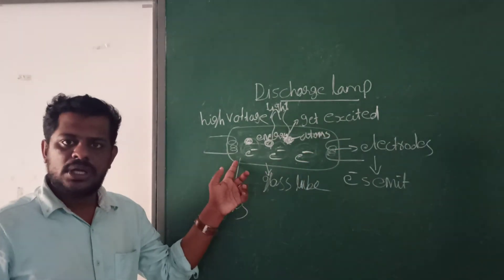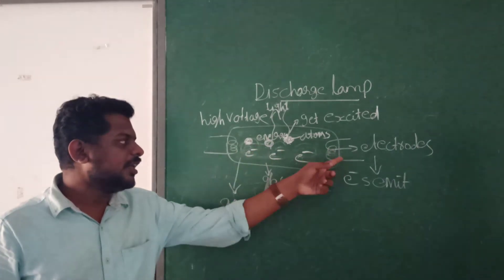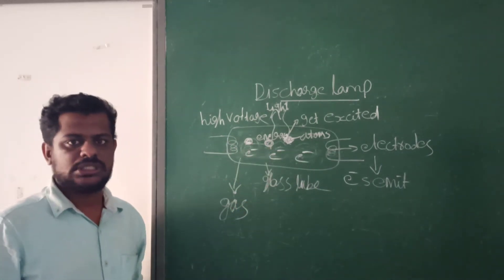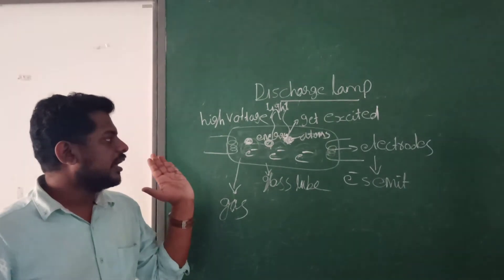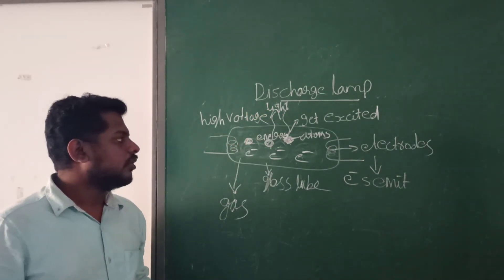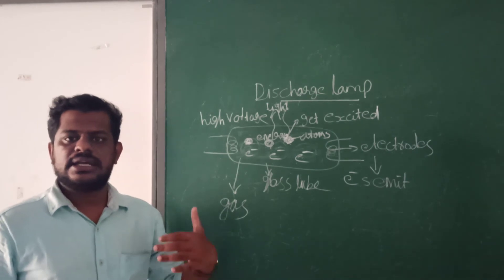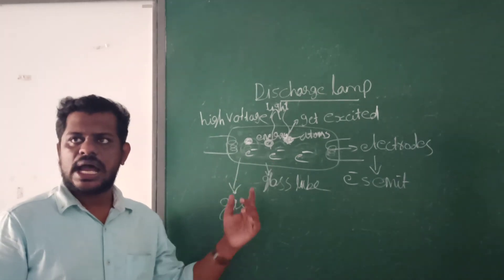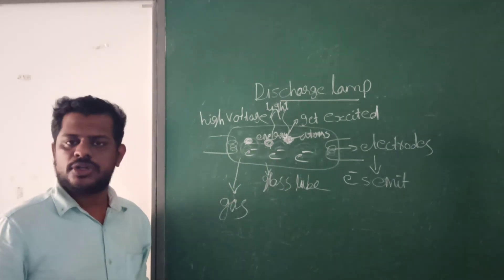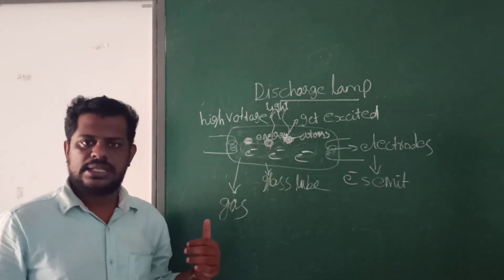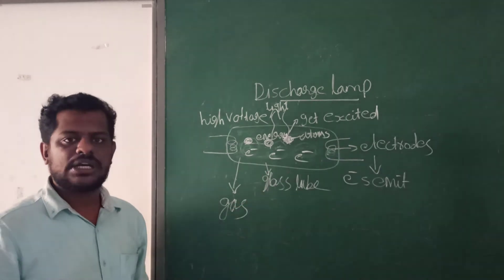To summarize: a discharge lamp is a glass tube with two electrodes on both sides. When high potential difference is applied, electrons emit from the electrodes and pass through the gas filled inside the glass tube. A discharge is created, and if, for example, hydrogen gas is inside the tube, its gas molecules get excited — gaining high energy — and then release that energy in the form of light. This is the working of a discharge lamp.